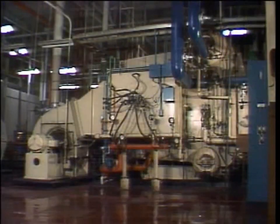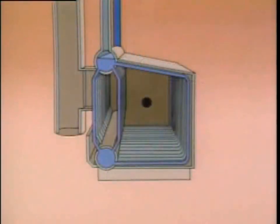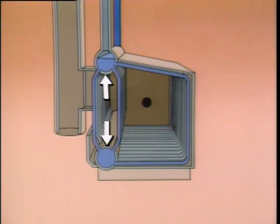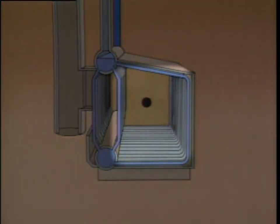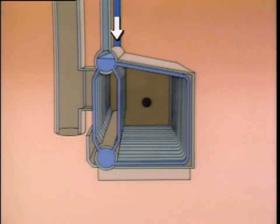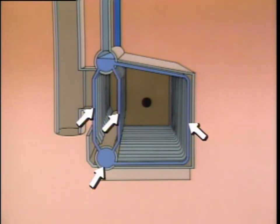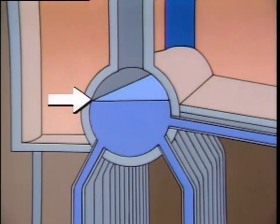Water tube boilers use tubes to route water and steam through the boiler. The combustion gases flow past the outside surfaces of the tubes. Water tube boilers may vary in design, but most of them operate in basically the same way. This particular boiler consists of a series of water tubes and two drums. The drums distribute water to the tubes. The water tubes connect the drums and form a wall around the combustion area. Water is fed into the upper drum through a feed water inlet line. The water tubes and the lower drum are completely filled with water, while the upper drum is only filled to a certain level. This provides space for steam to collect, so the upper drum is often called the steam drum.